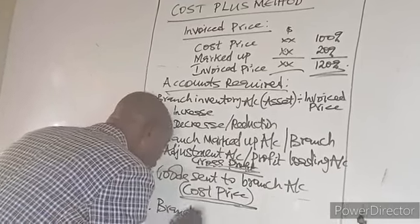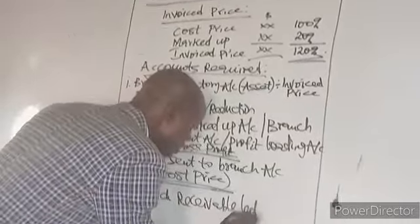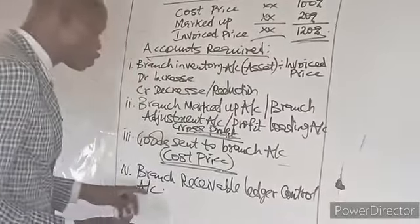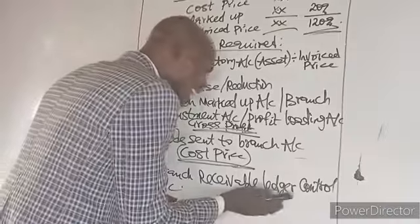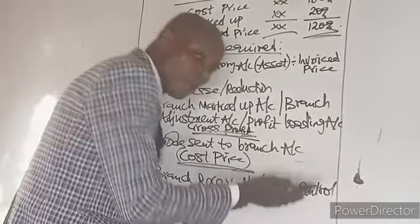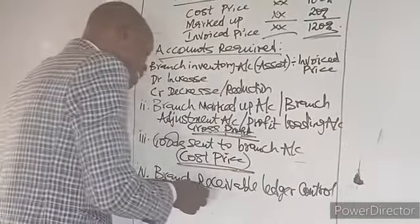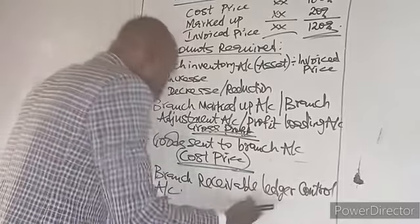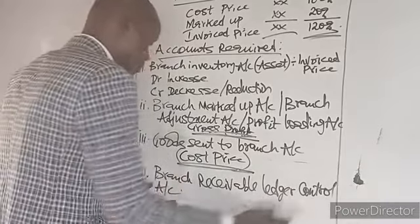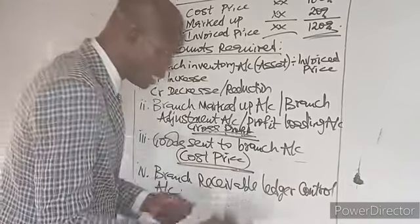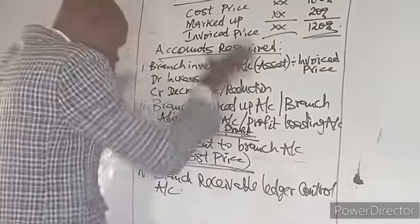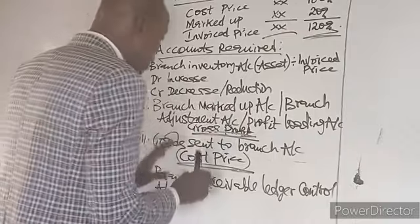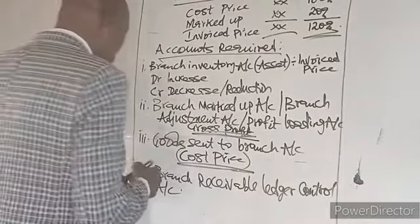Number four is the branch receivable ledger control account. This account shows the movement of items between the branch and the branch customers. Only the items that occur between the branch and the customers will be recorded in this account. Remember the double entry principle: debit the receiver and credit the giver. Everything we record under this method must be in line with the principles of double entry.